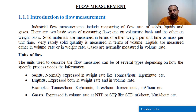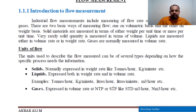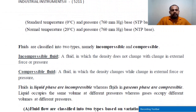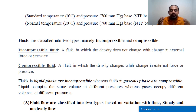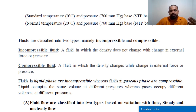There are normal meters cubed per hour as units. For STP, the standard temperature is zero degrees and pressure is 760 mm of mercury. For NTP, the normal temperature is 20 degrees and pressure is 760 mm of mercury. Fluids are classified into two types: incompressible and compressible.